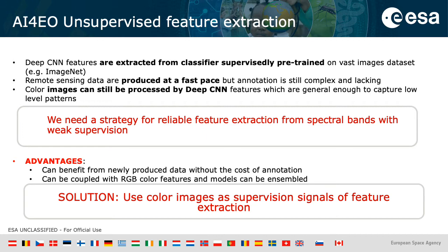Color images can still be processed by deep CNNs because experiments show that low-level features can be transferred from general color images to earth observation images without loss in performance. We therefore needed a strategy for feature extraction from spectral bands even in the absence of supervision. The key insight is that we always have a weak supervision signal available from color images, so the idea is to use color as the annotation for spectral band images.